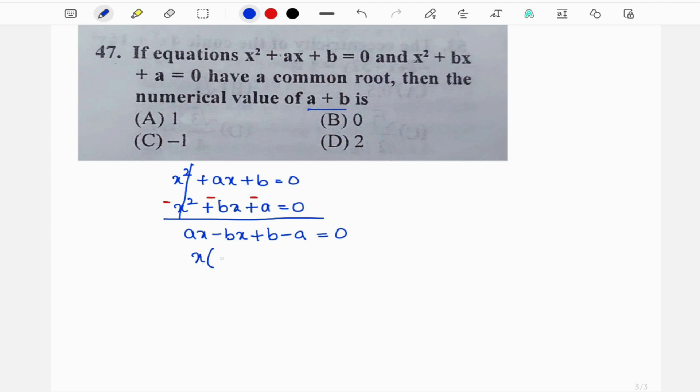From the first two terms I will take x common, we will get a minus b. And these two terms I will take to the right hand side, so minus a goes to the right hand side it becomes plus a, this plus b goes to the right hand side it becomes minus b.